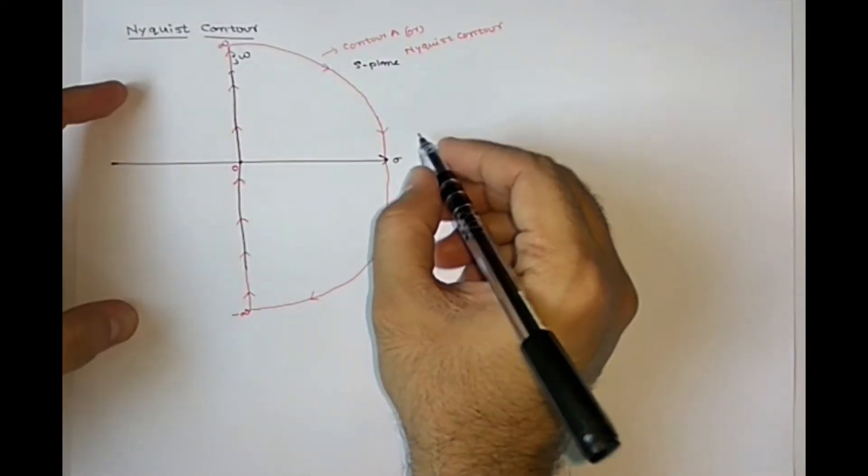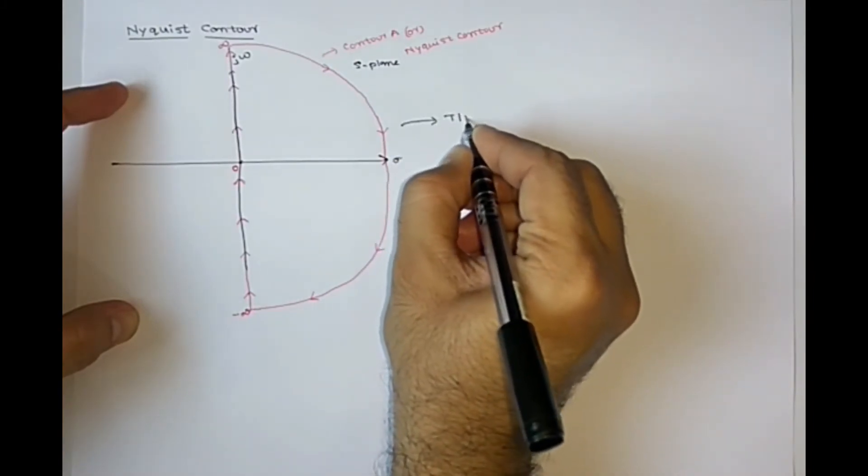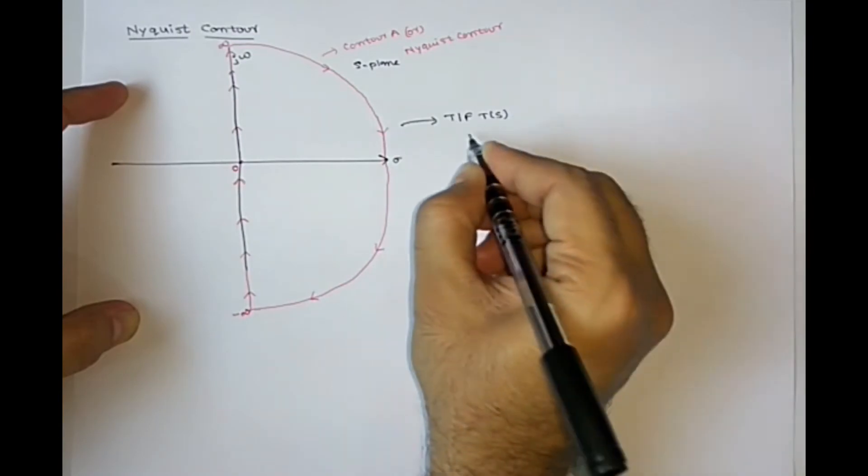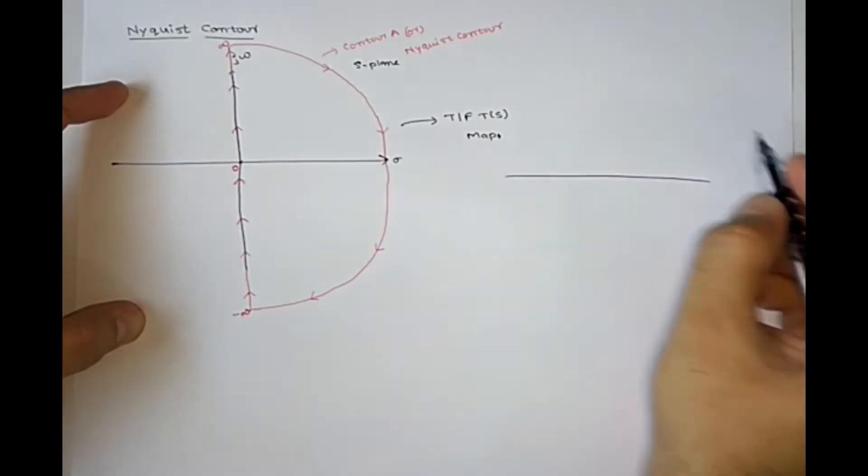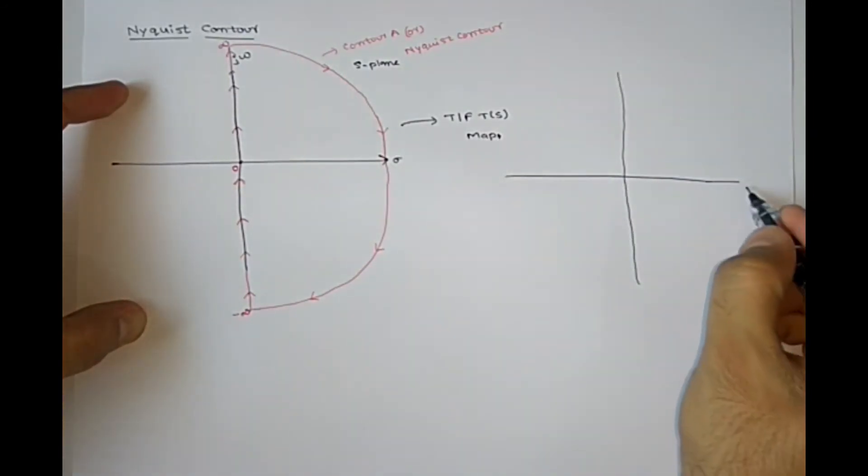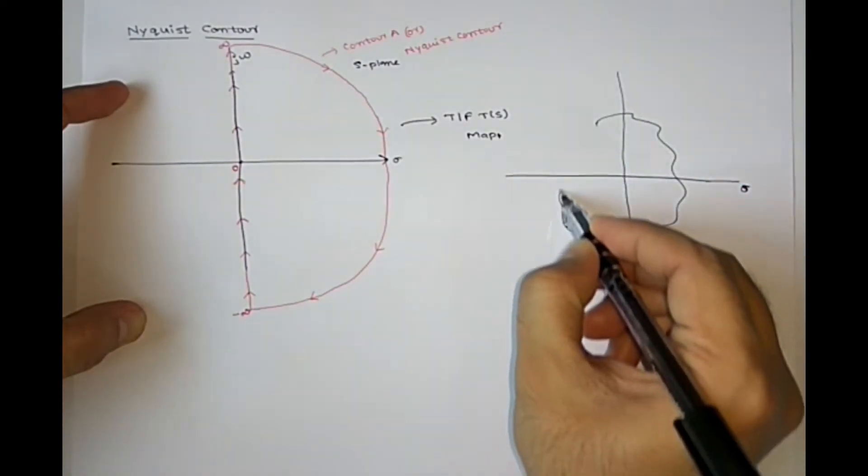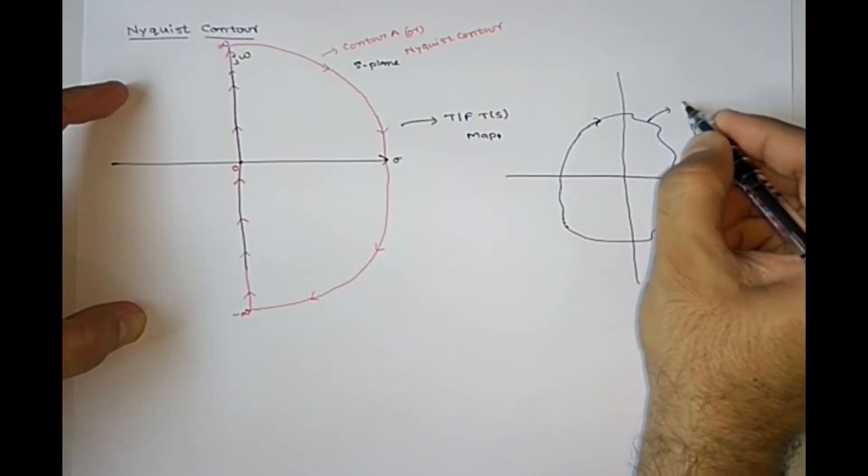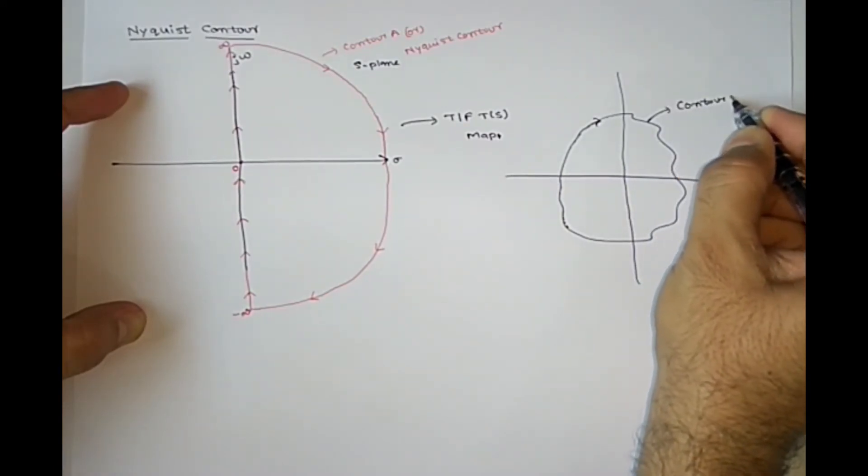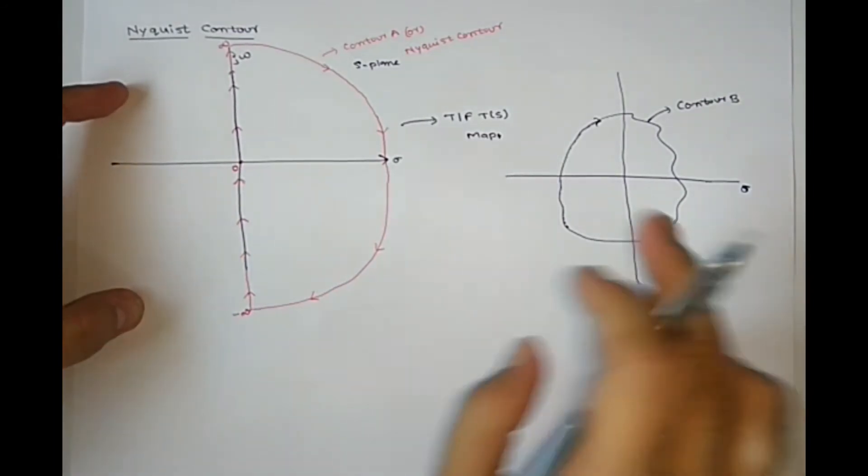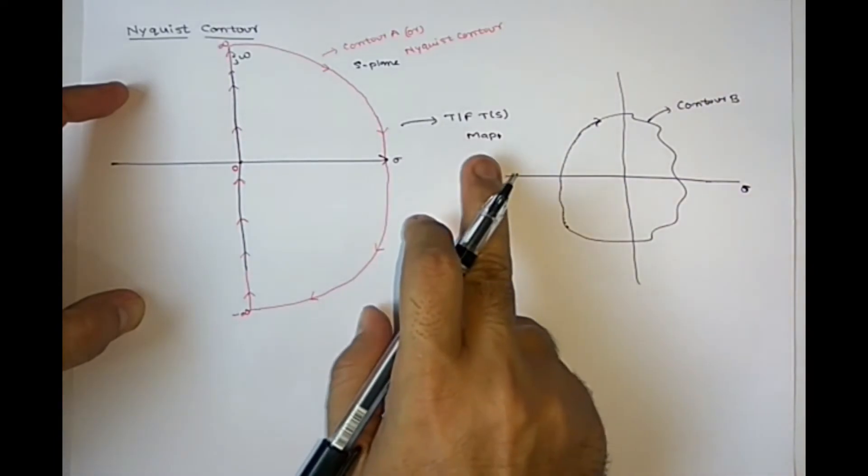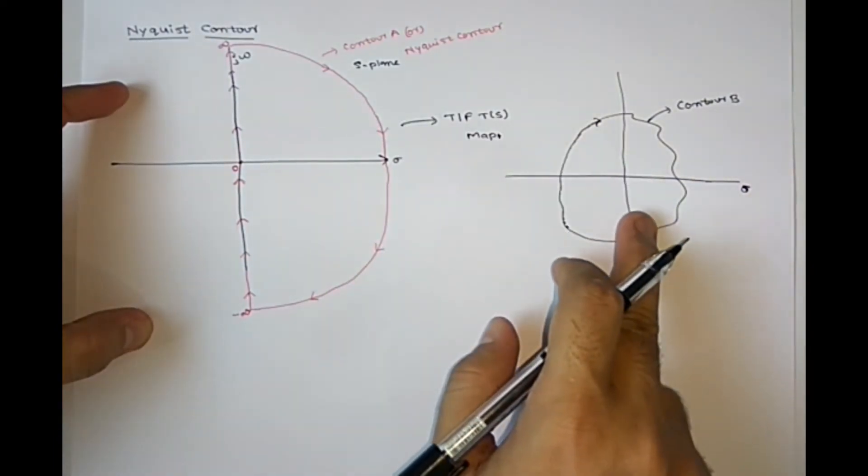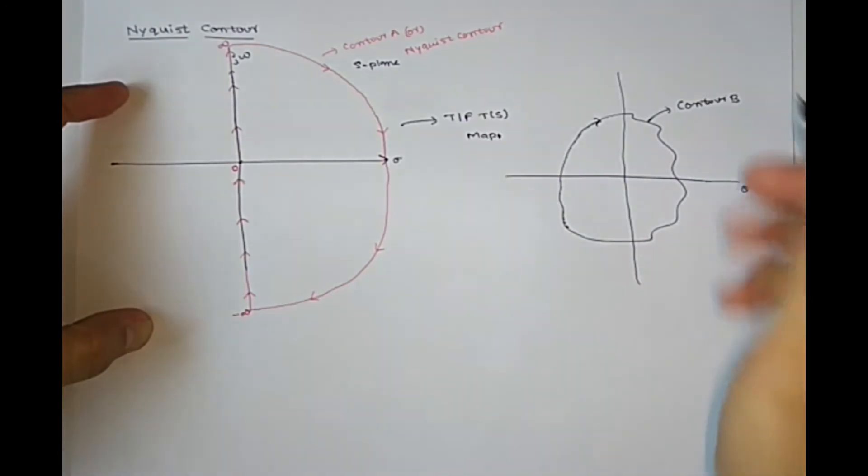For this contour, by using some transfer function, T of S, if you map, you will get some contour B. This contour B will be called Nyquist plot.